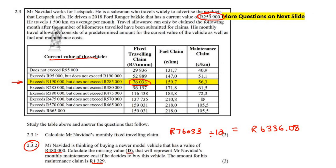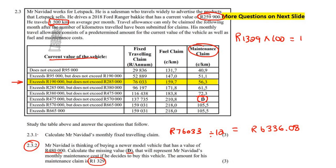It's a bit of a weird question but actually very easy — they just want us to calculate this value. They want the cents per kilometer. The maintenance claim tells us how much money is spent and we know how many kilometers he drives. First, convert to cents: 1,329 multiplied by 100 gives the cents value. Then divide that by the kilometers — cents divided by kilometers — so 132,900 divided by 1,500.